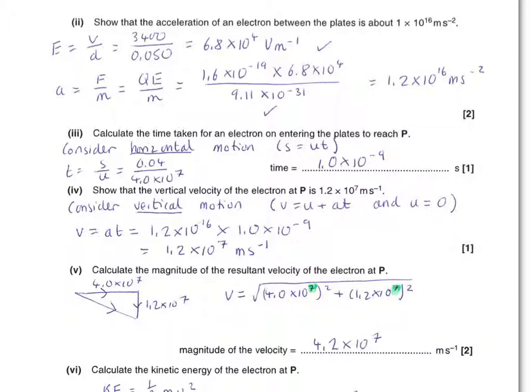The next part of the question asks you to find the time for an electron passing between the plates to reach the point P. Remember, this point was midway along the length of the plates. Now, in the horizontal direction of motion, there is no force acting. And so, we can just say distance is speed times time. Rearranging that, the time will be the distance divided by the initial horizontal velocity. Substitute the values and we have an answer of 1.0 times 10 to the minus 9 seconds.